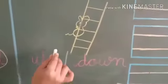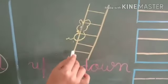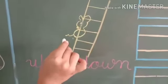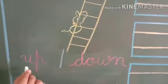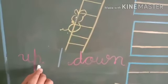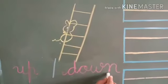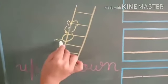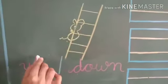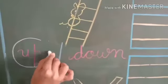Then, scissor picture. Rat, rat up ja raha hai ya down? Upar ja raha hai ya niche? Yaha pe U-P, up, up means upar. And D-O-W-N, down, down means niche. Rat up ja raha hai, upar means up. U-P, up.